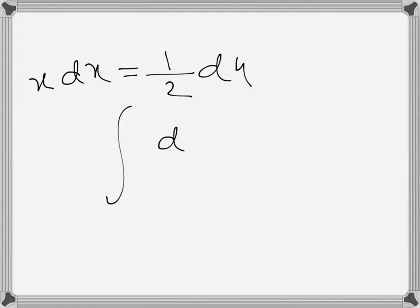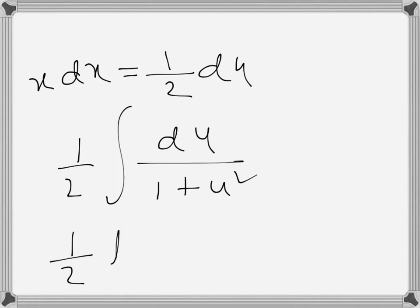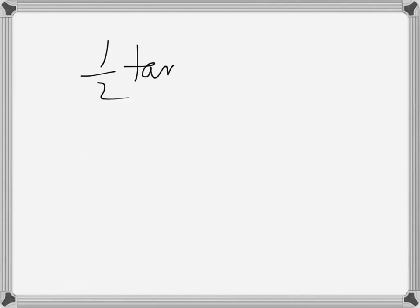This integral will become 1 over (1 plus u squared) times one half du, which can be written as tan inverse u plus c, or substituting back, tan inverse x squared plus c.